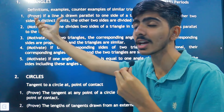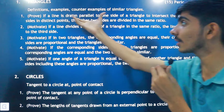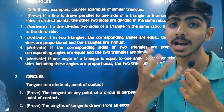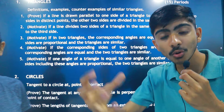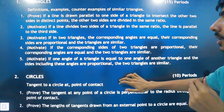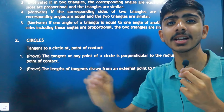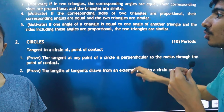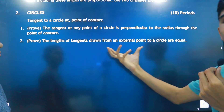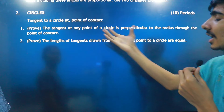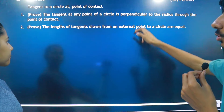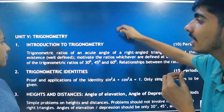In Triangles, you will see the proof of theorems — the proof is going to come in the exam. You need to remember the theorem and apply it in questions. In Circles, there are basically two theorems: the tangent at any point of a circle is perpendicular to the radius, and the lengths of tangents drawn from an external point are equal.